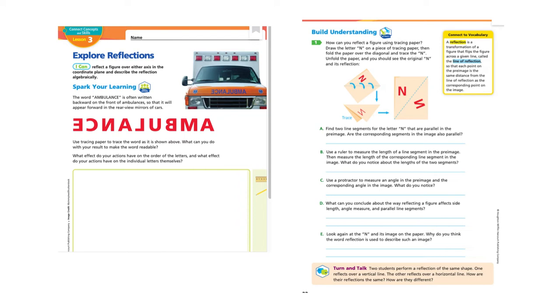Let's look at number one. How can you reflect a figure using tracing paper? Draw the letter N on a piece of tracing paper, then fold the paper over the diagonal and trace the N. Unfold the paper and you should see the original N and its reflection. They've given you an example here of what it should look like.